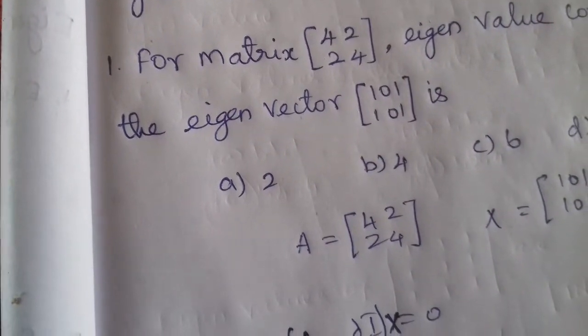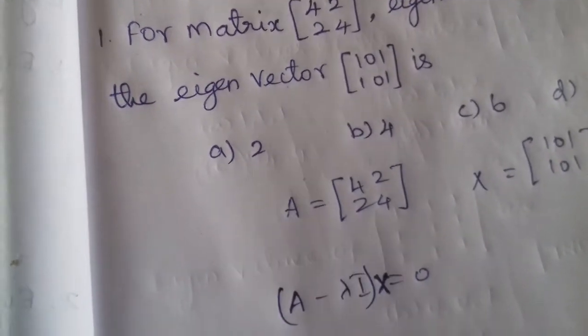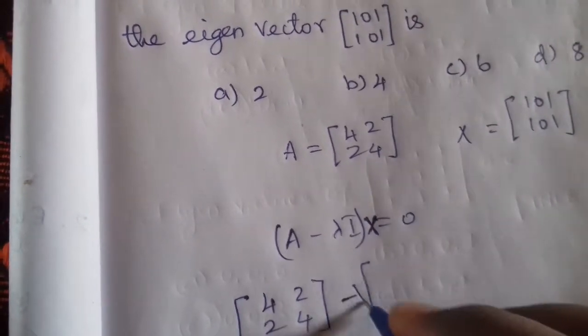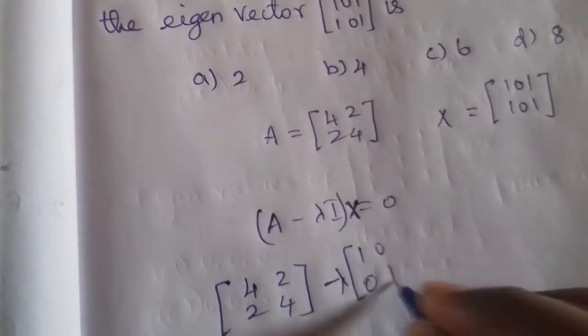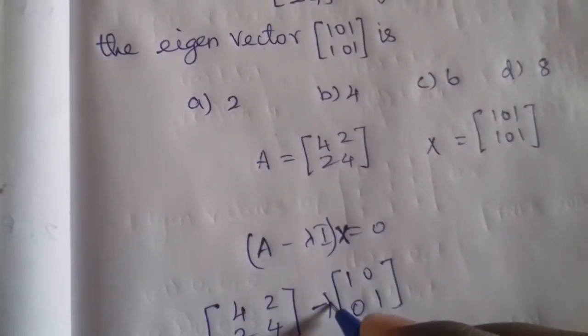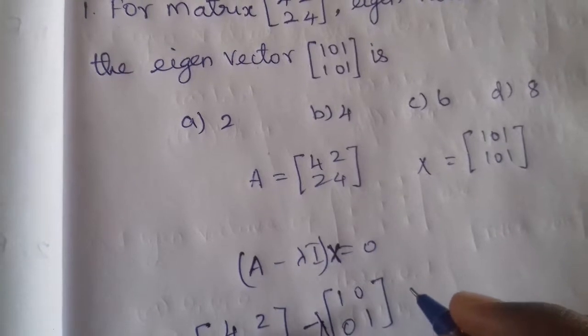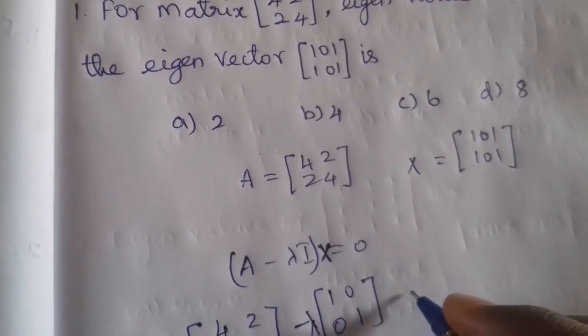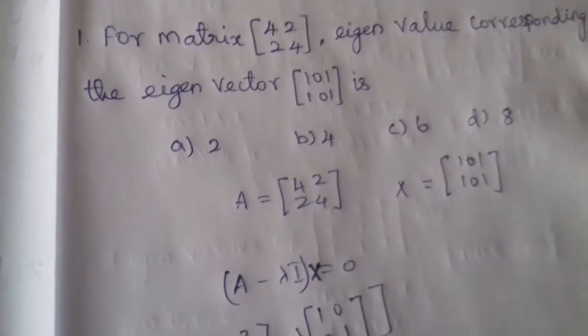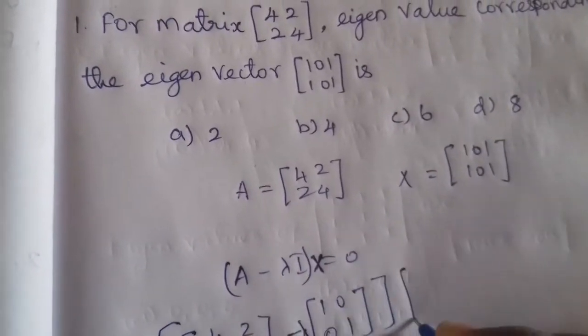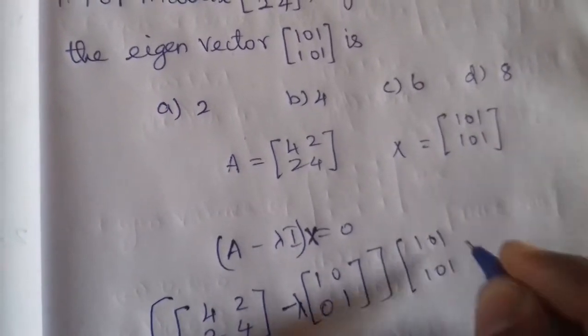What is A? A is given as [[4, 2], [2, 4]]. Minus lambda I — where I means the identity matrix, that is [[1, 0], [0, 1]]. So lambda times [[1, 0], [0, 1]], multiplied by x = [1, 1], equals 0.